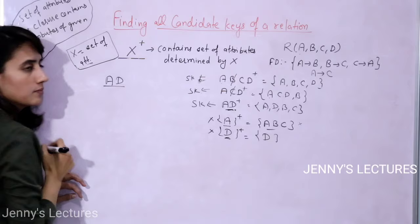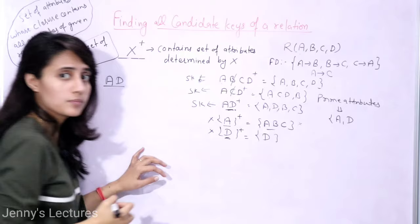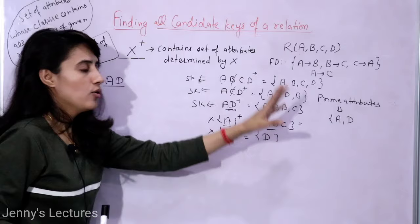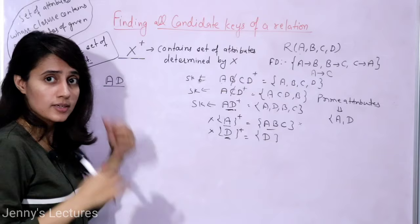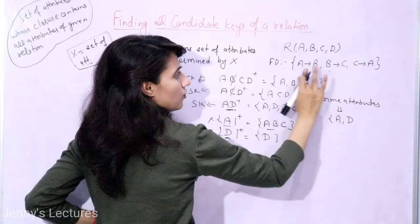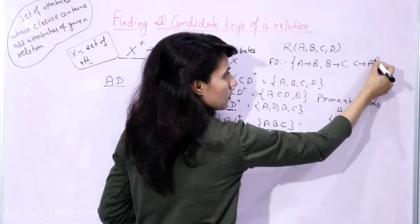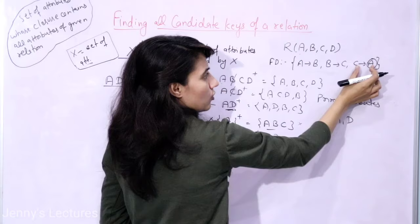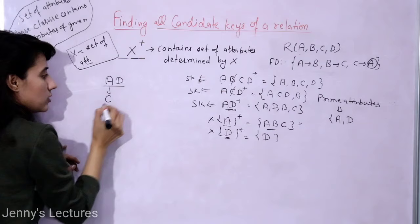We have one candidate key: AD. Prime attributes are A and D. Now apply the second step: check whether prime attributes A or D appear on the right-hand side of any functional dependency. A is available on the right-hand side of one functional dependency — C determines A. So we can replace A in the candidate key AD with C to get a new potential candidate key: CD.